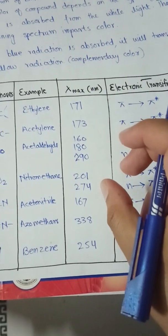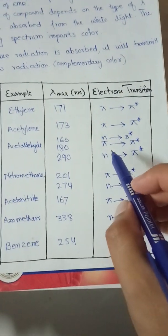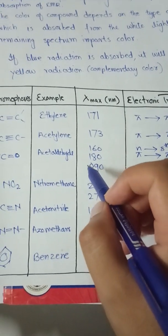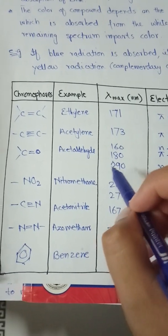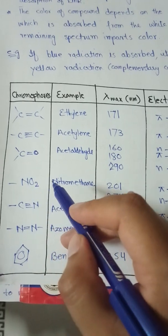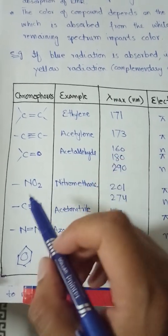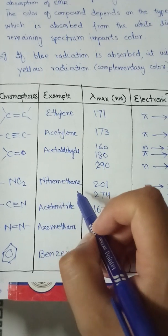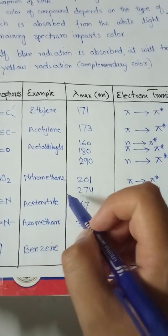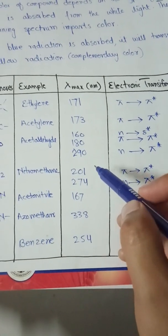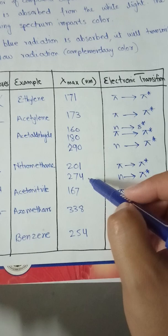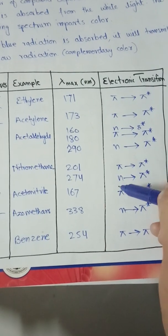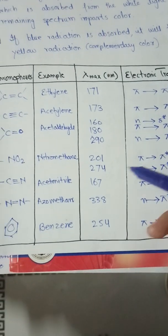As long as the energy difference from HOMO to LUMO decreases, the wavelength increases — this is the bathochromic effect, which we discuss later in the video. Nitro group — nitromethane is an example; it has two lambda max values: 201 nm and 274 nm, from pi to pi star or n to pi star transitions.